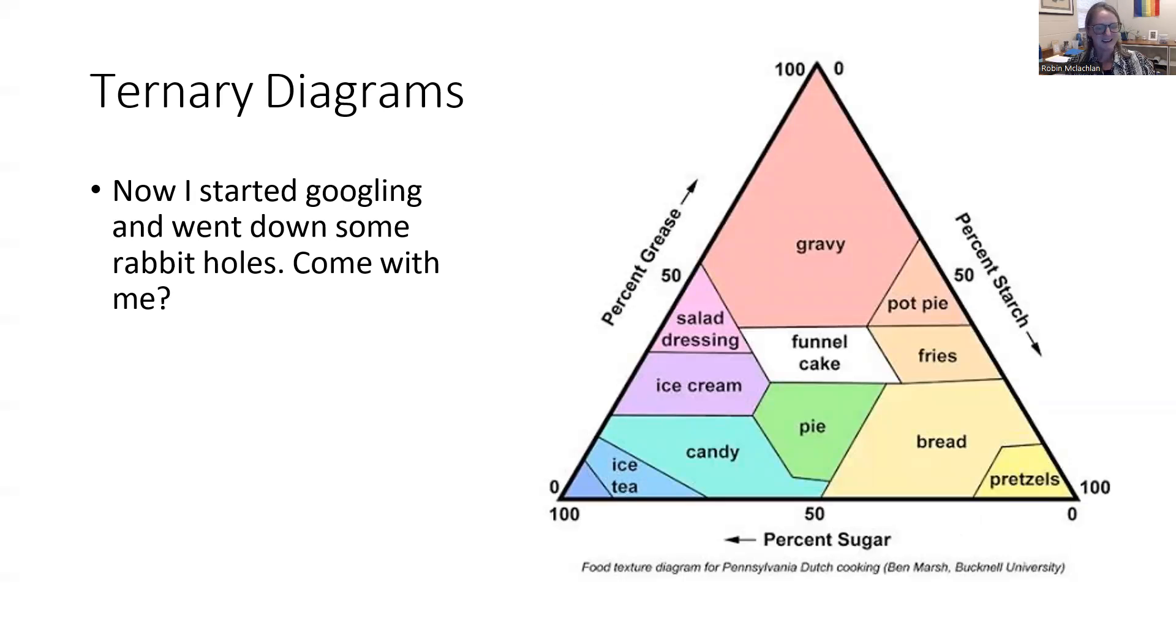For all you foodies out there, you could talk about foods based on their percent grease, starch, and sugar. If you've got all of those, you might have a funnel cake. If you have just starch and nothing else, you might have a pretzel.